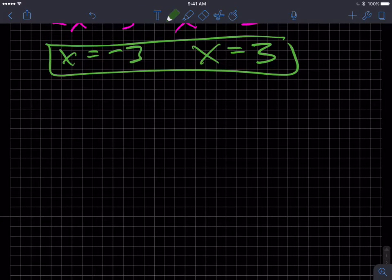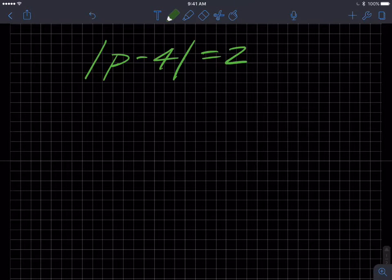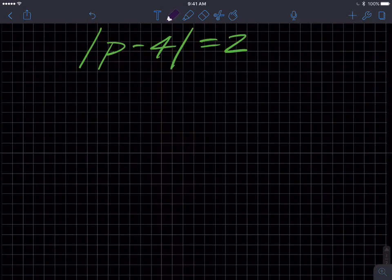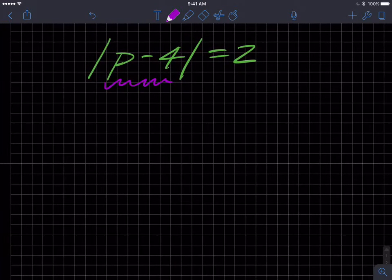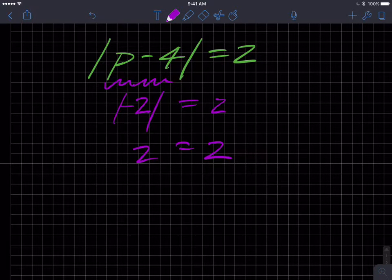Let's see that idea in action in a much more complicated absolute value problem. So here we go, |p minus 4| is equal to 2. And so this value can be a negative version of that. In other words, this stuff in here could be negative 2, and when you take the absolute value of negative 2, that would equal 2, and that'll work.